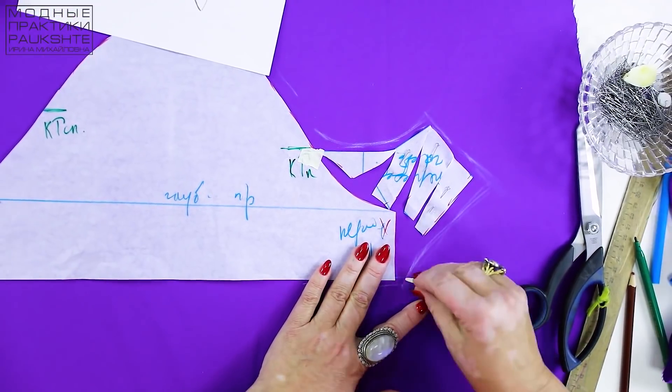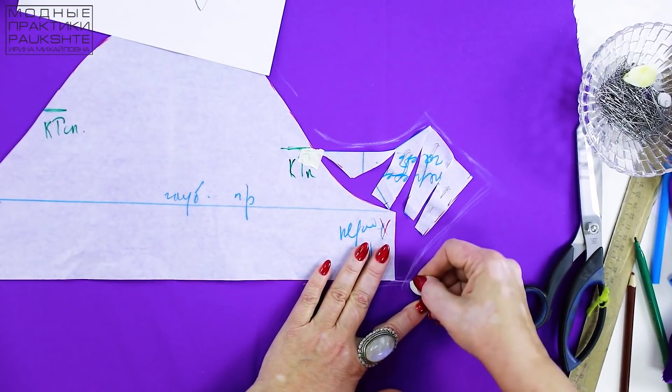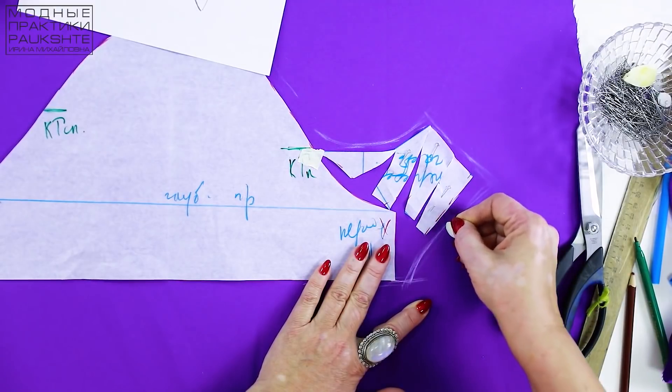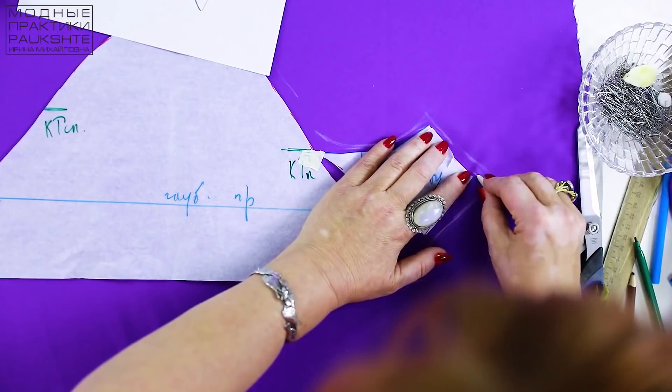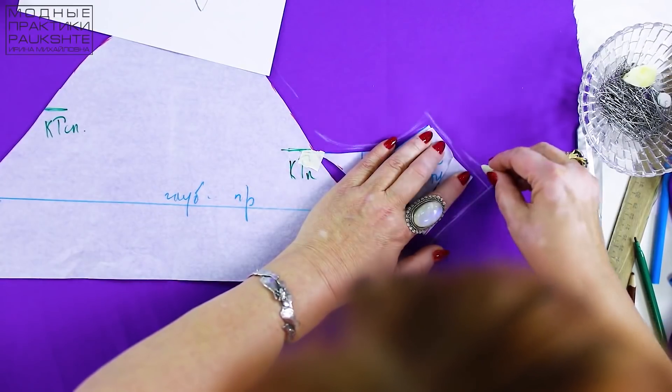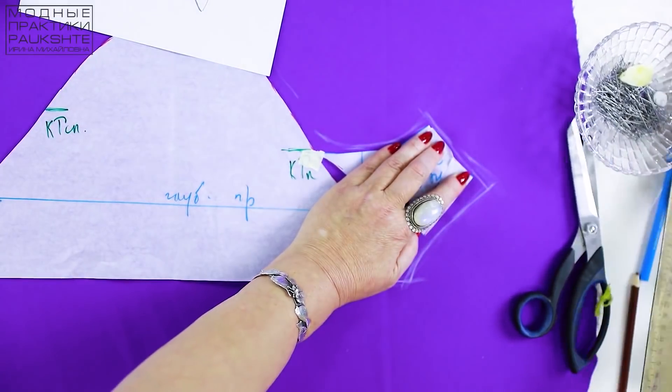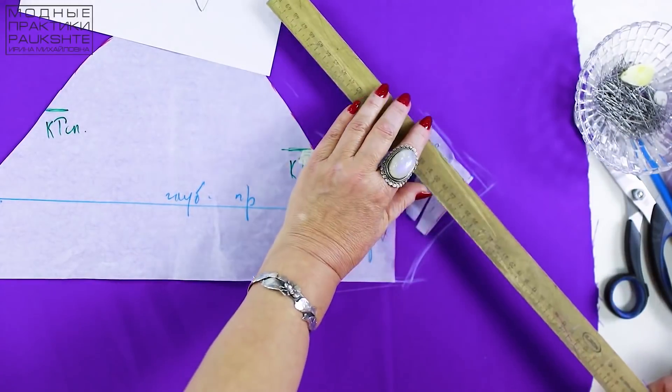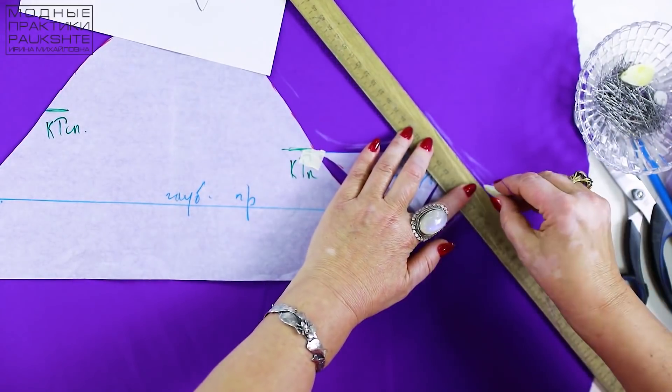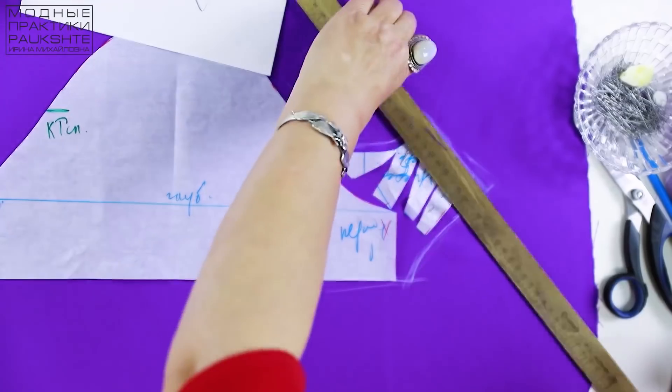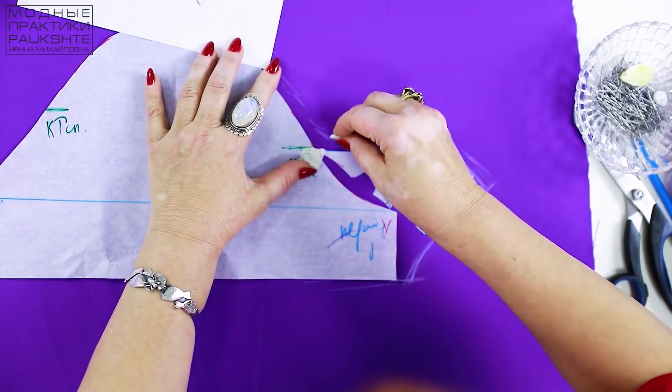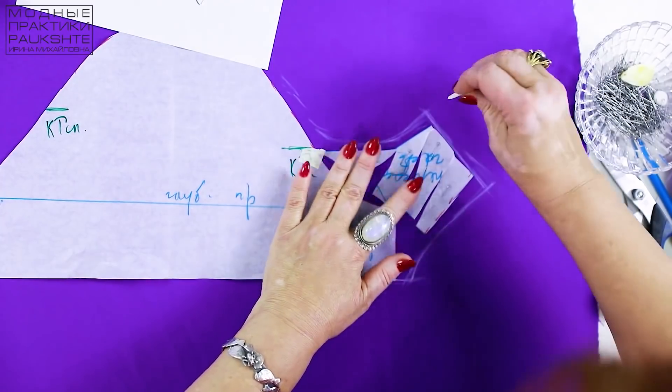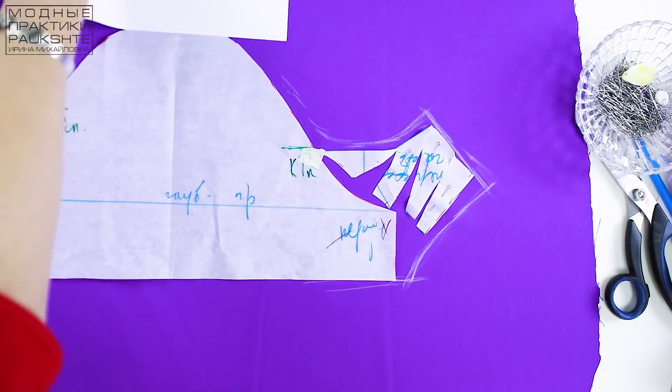Have a look here. Of course, the sleeve has become a bit wider. Now I need to draw a round line. This is the line which will be inserted in the armhole. It should be straight. Here I draw a new line adding one centimeter for a seam. Try to copy the original sleeve head.